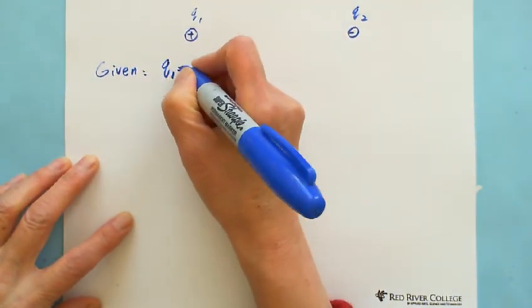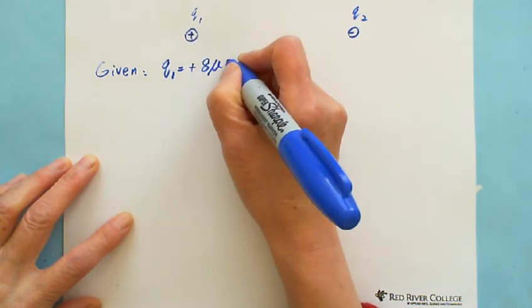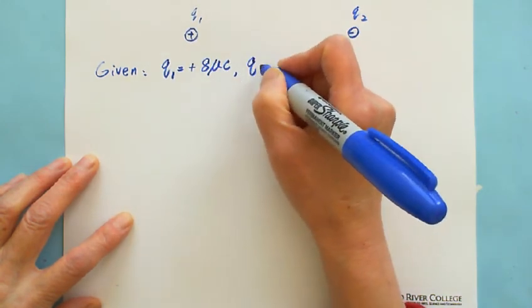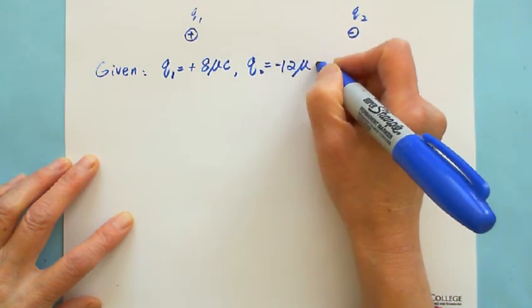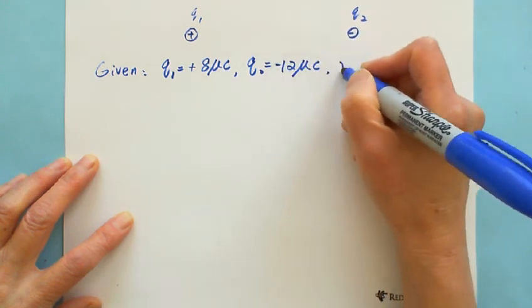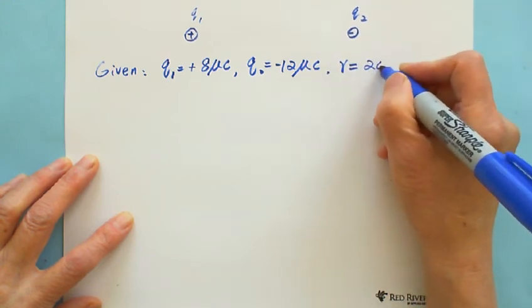Given: Q1 equals positive 8 microcoulombs, Q2 is negative 12 microcoulombs, and the distance between these two charges is 20 cm.